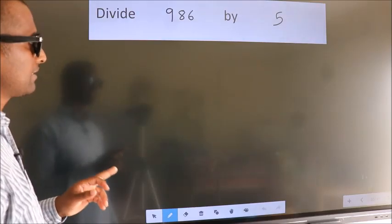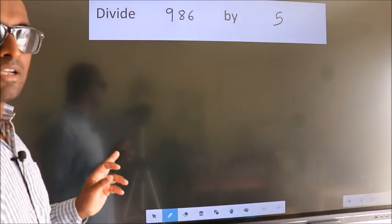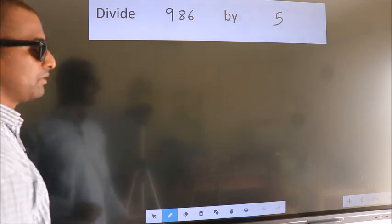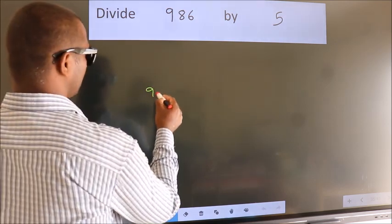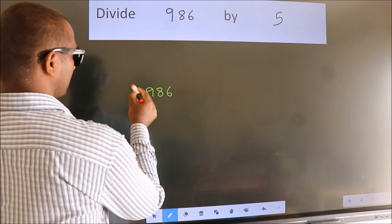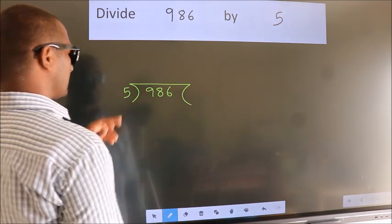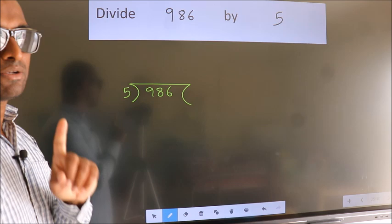Divide 986 by 5. To do this division, we should frame it in this way: 986 here, 5 here. This is your step 1.